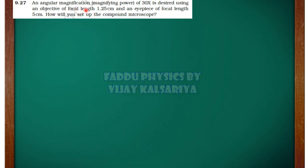An angular magnification, magnifying power of 30x is desired using an objective of focal length 1.25 cm and eyepiece of focal length of 5 cm. How will you set up the compound microscope?